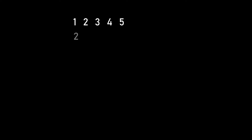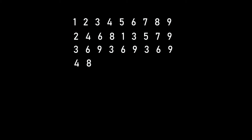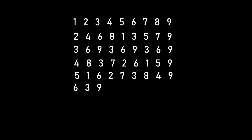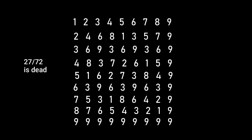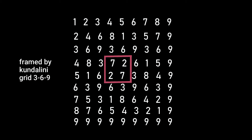Simply do this for all the numbers between 1 and 9 and then place them on the grid. You will notice patterns emerge. 72 and 27 is dead center. It is framed by the kundalini grid of 3, 6, and 9.